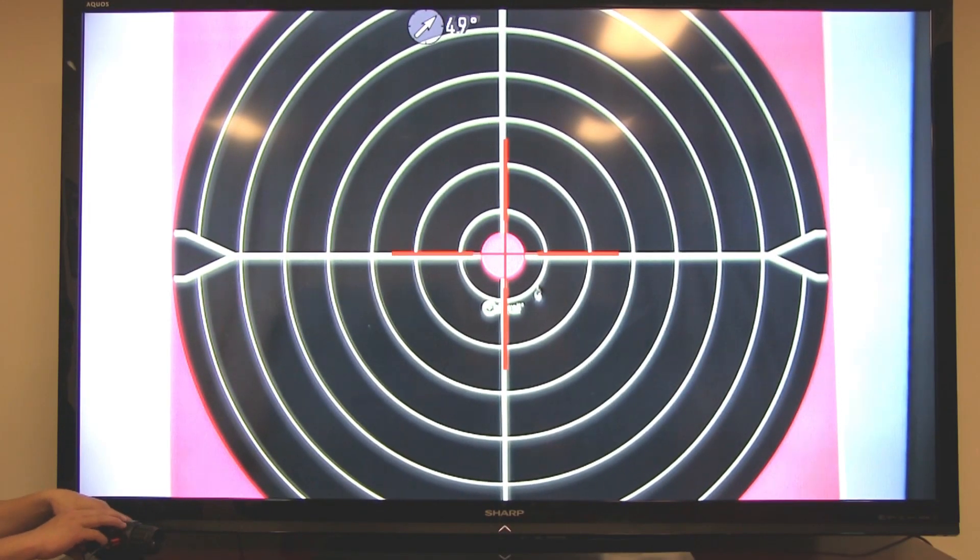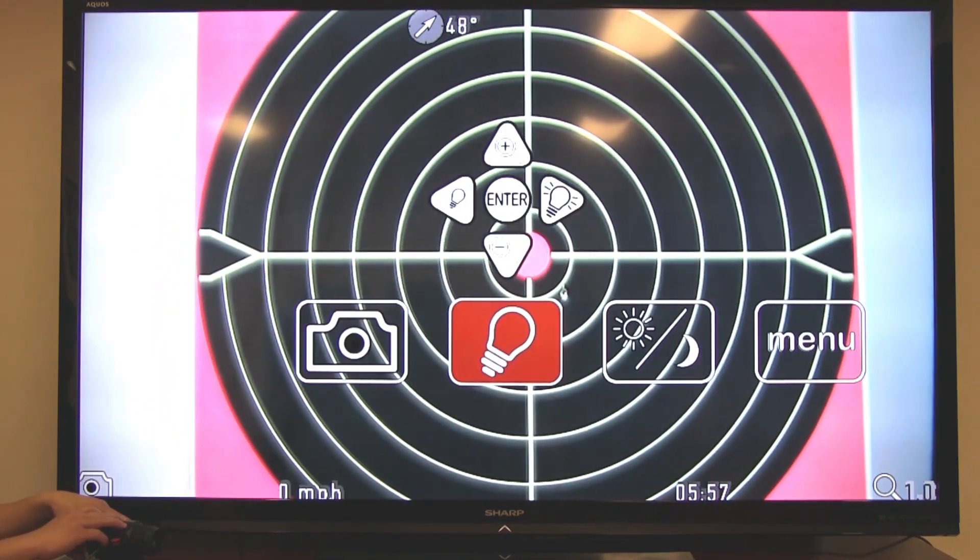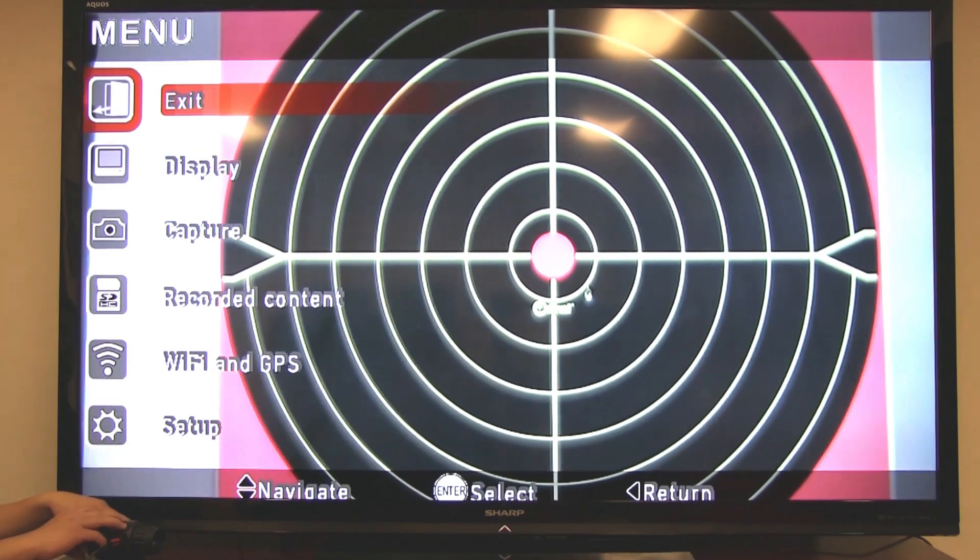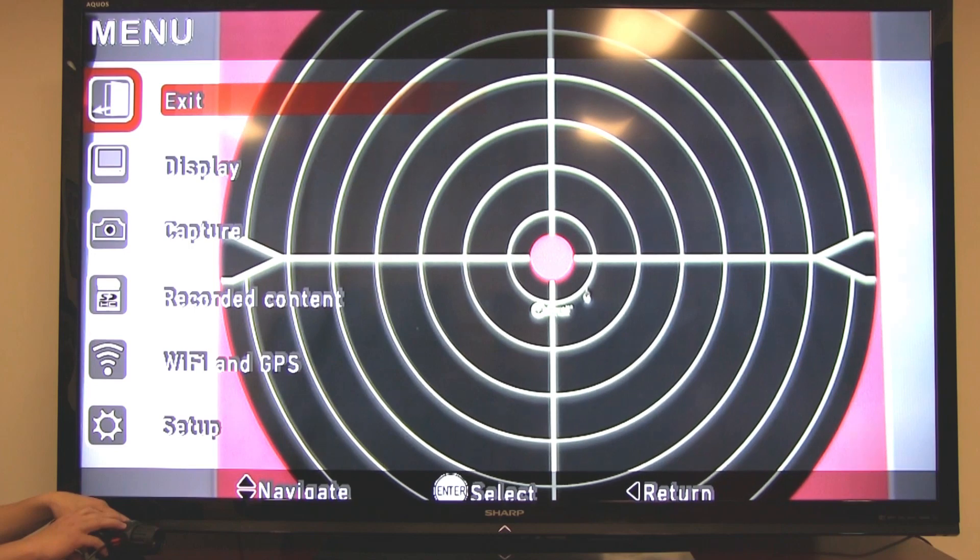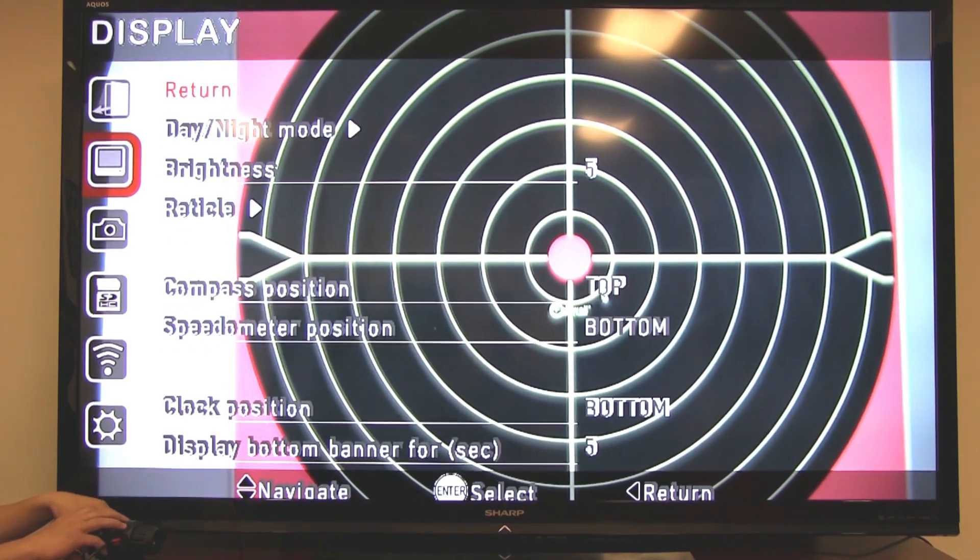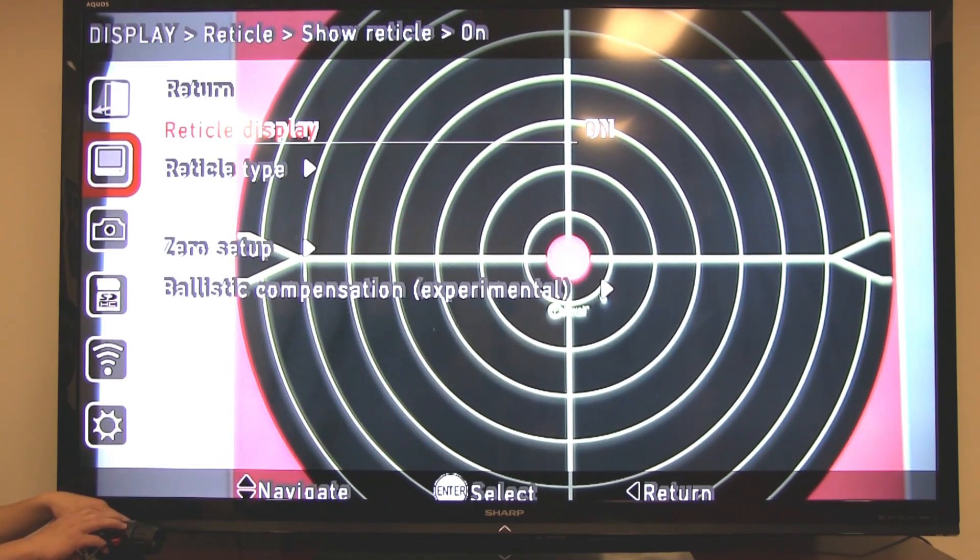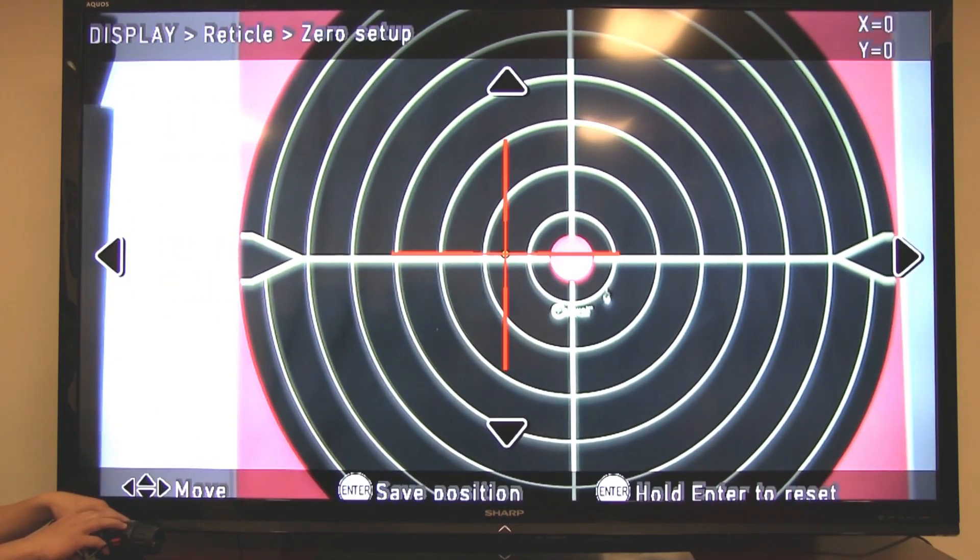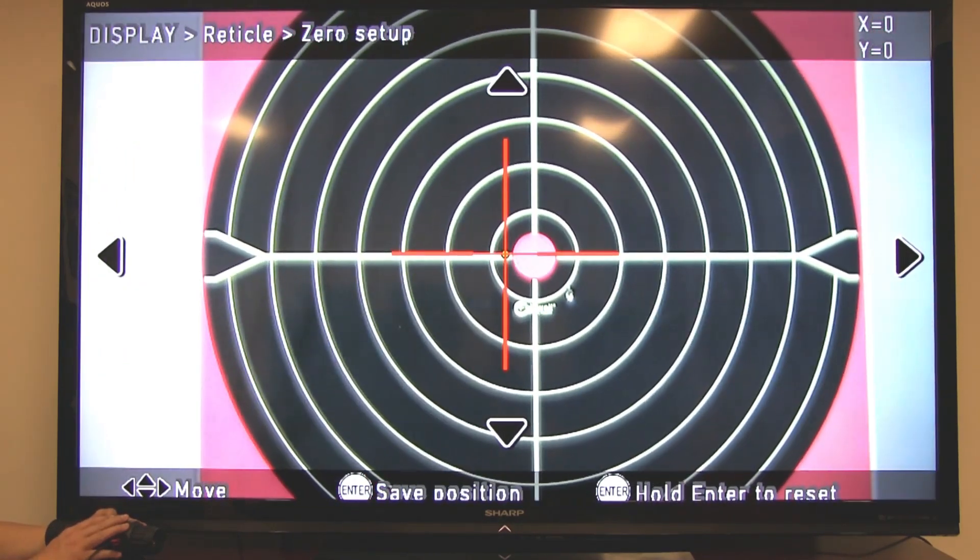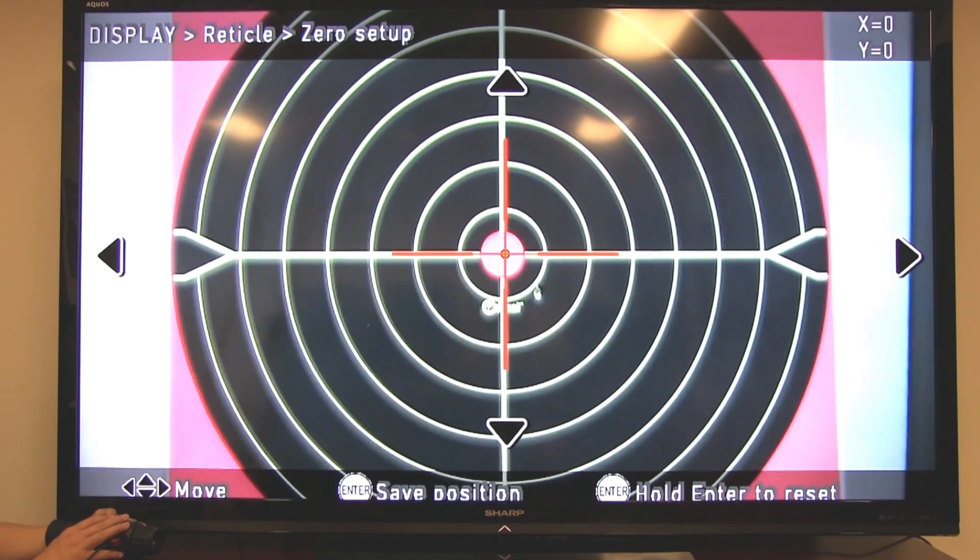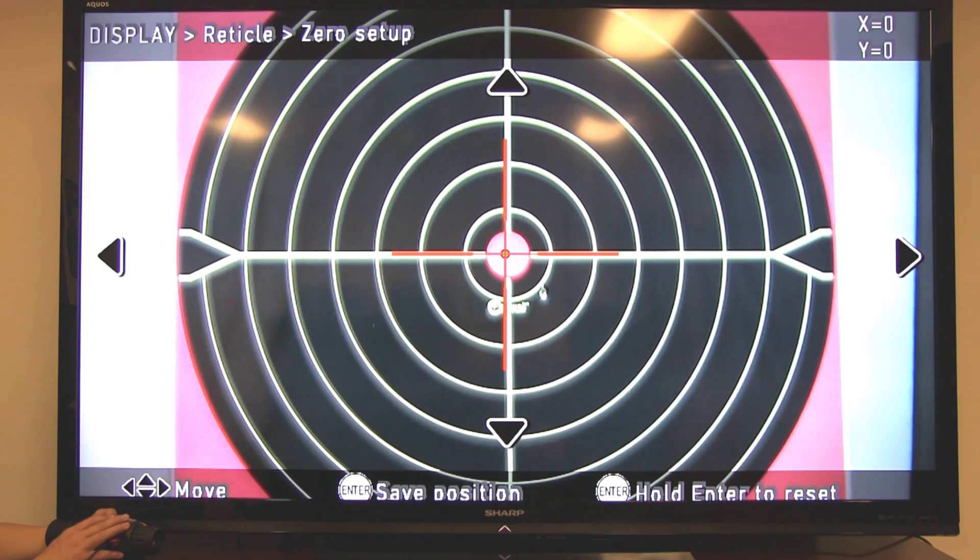Press the enter button twice to bring up your user interface. Move the cursor to the menu icon and press enter. To get to the zero setup menu, select display. Then select reticle. Then select zero setup. This will bring you to your screen with coordinates in the top right corner. A green dot, which is your original point of aim. And the reticle.